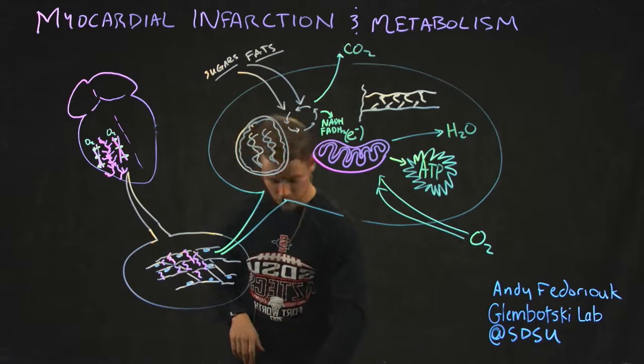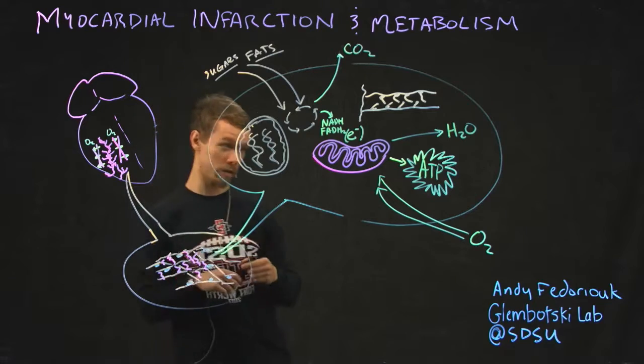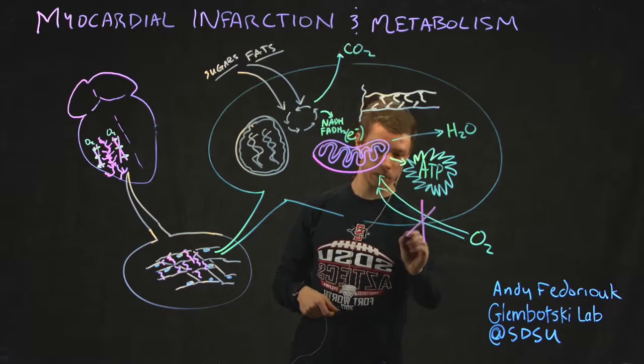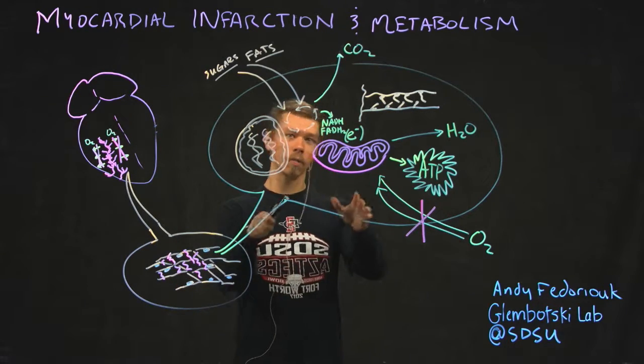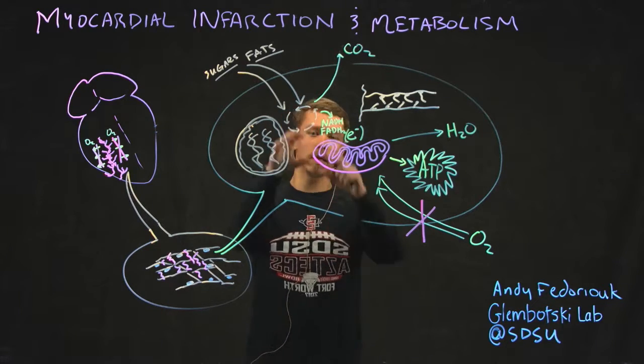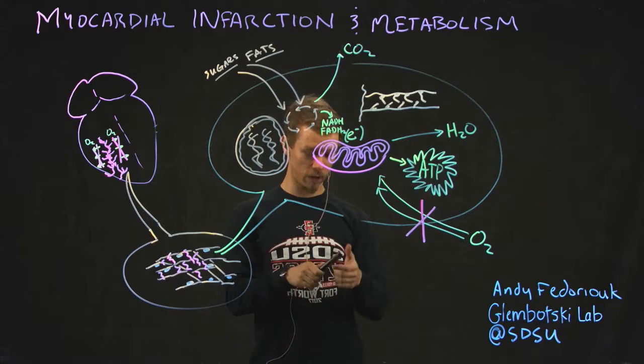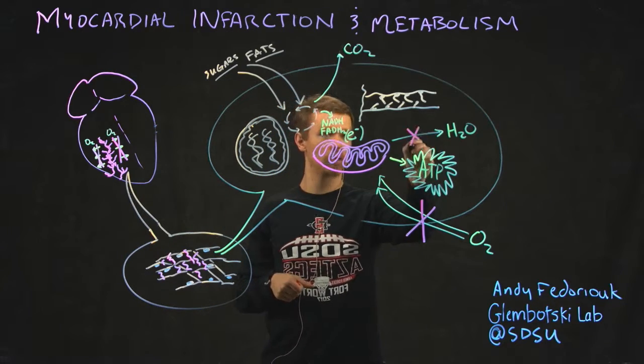But what happens if, for instance, you have blockage of your capillary beds and vessels in your heart and you don't get the oxygen imported, so you shut off the oxygen import into the cell. The problem is you still have sugars and fats for a while, and you still have plenty of these substrates in the cycle making these electrons. So what happens to the electrons if you don't have oxygen? Well, you can't make H2O.